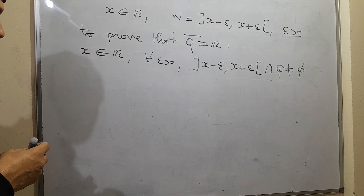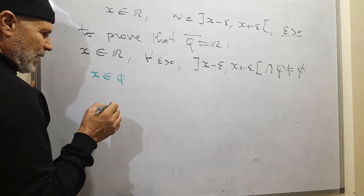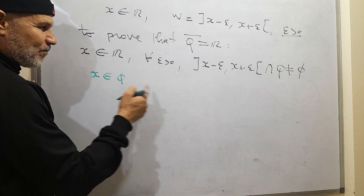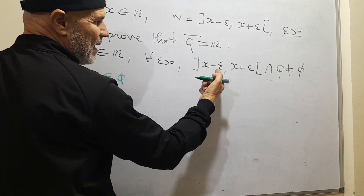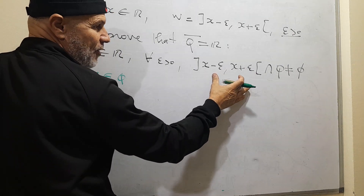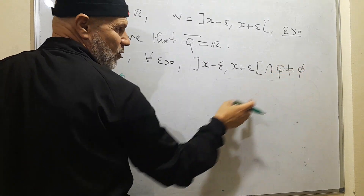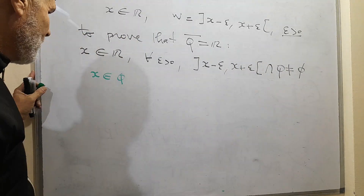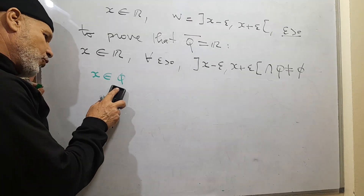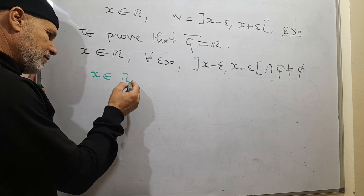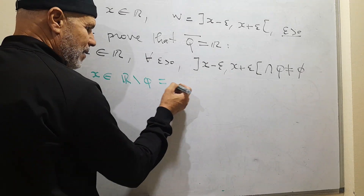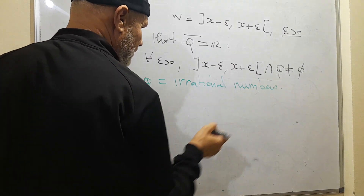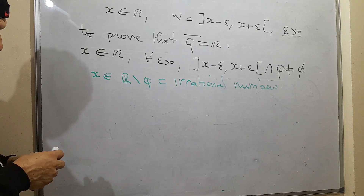So, if X belongs to Q — X is from R but it can be from Q — then for any ε, X belongs to the open interval (X − ε, X + ε), and the intersection with Q is different from the empty set. Why? Because X is from Q, so the intersection is obviously non-empty. We therefore suppose that X is not in Q, meaning X is in R minus Q. These are the irrational numbers.